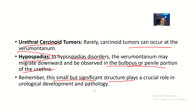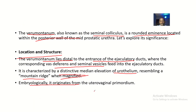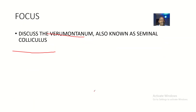Remember, this small but significant structure plays a crucial role in urological development and pathology. That's the verumontanum, also known as the seminal colliculus — covering its anatomy, location, and contents. I'll see you in the next tutorial.